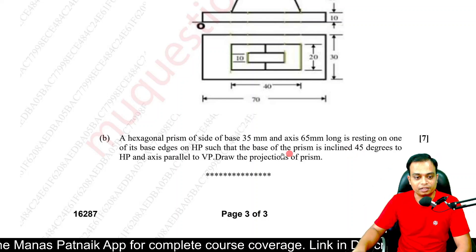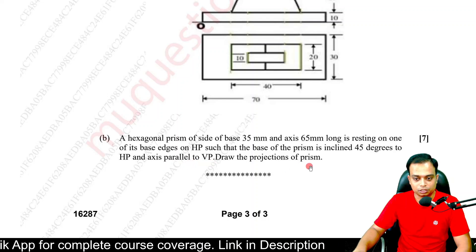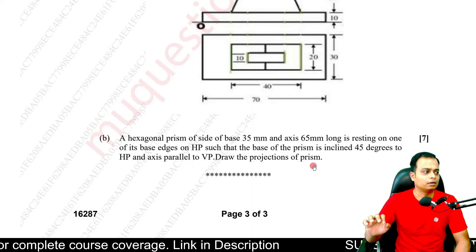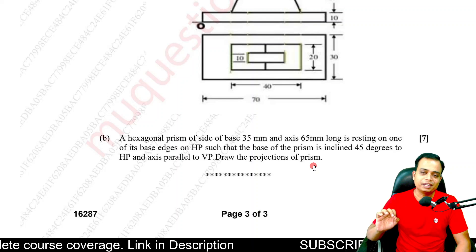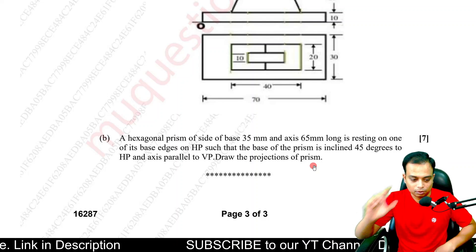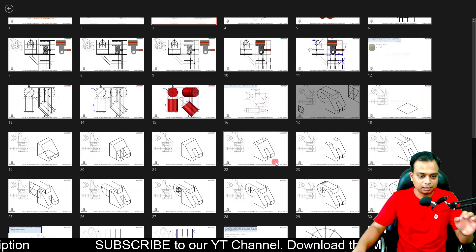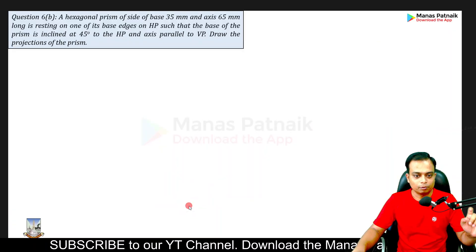Base inclination has been given as 45 degrees to the HP, axis being parallel to VP. Draw the projections of the prism. Let me tell you from the outset, this is a very easy problem. You can crack this in the next 10 minutes and I'll try to deliver in 10 minutes only. Let me write down all the details which have been given in the problem.